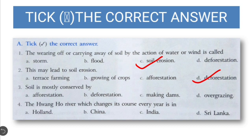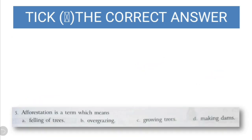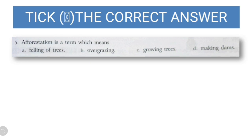Third question: soil is mostly conserved by afforestation, deforestation, making dams, or overgrazing? The correct answer is afforestation. Fourth question: the Wanguo River, which changes its course every year, is in which country — Holland, China, India, or Sri Lanka? The correct answer is China. Fifth question: afforestation is a term which means felling of trees, overgrazing, growing trees, or making dams? The obvious answer is growing of trees.